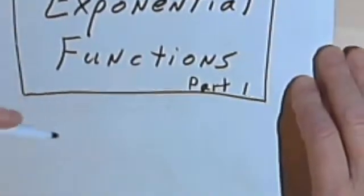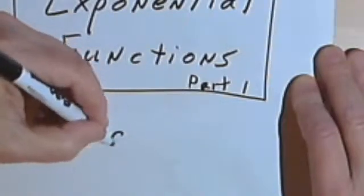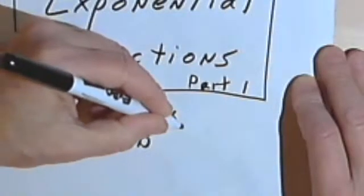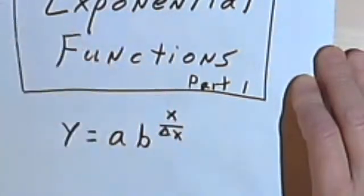So the equation we're going to get to, the general equation, is just going to look like this. Y equals a times b raised to the exponent x over delta x, where delta is this triangle symbol. But rather than jump right into this, I want to do it step by step.